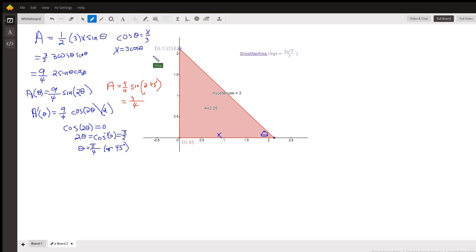And another way to do the problem real quickly is if you want to say that this is theta and use the formula that when you know two sides and an included angle of a triangle, the area is one half the product of the two sides times the sine of the included angle.